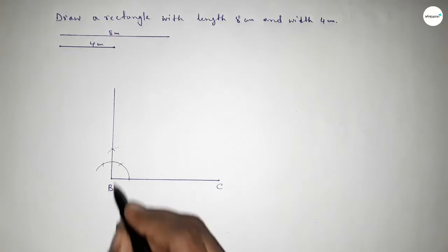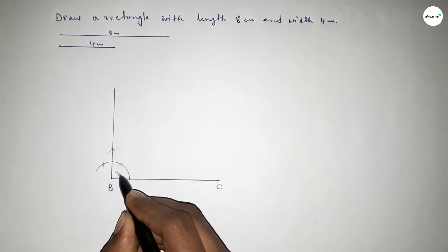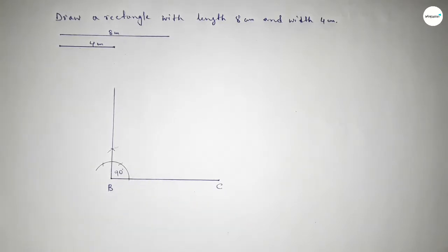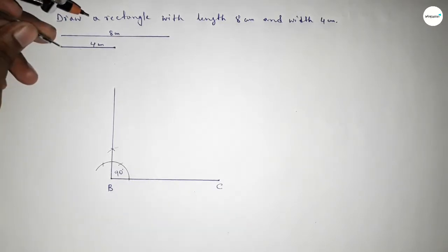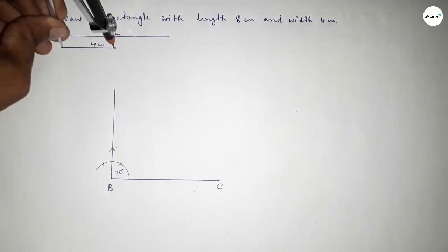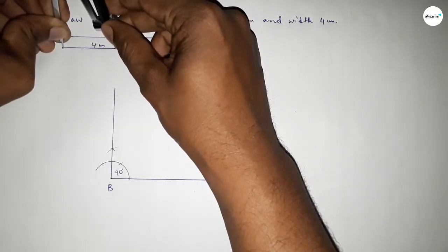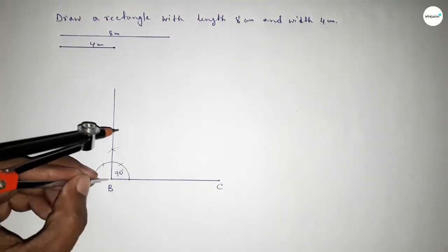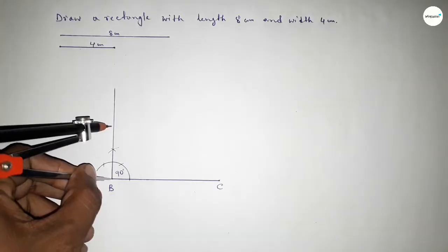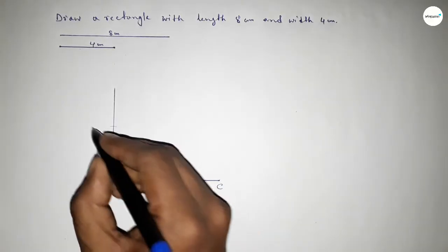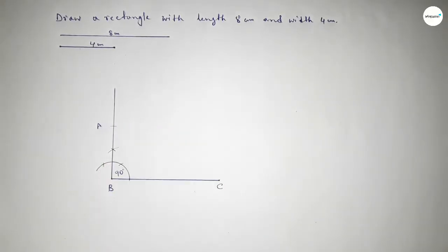Taking the length 4 centimeters using the compass and putting the compass on point B, cutting the perpendicular line to mark point A.